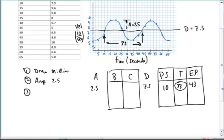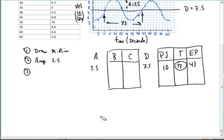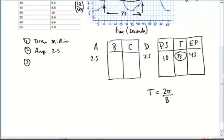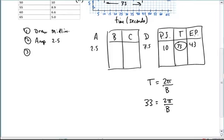Using that information, we use, we know that the period is equal to 2π over the frequency value. And we're going to just calculate, we're going to substitute in 33 for the period, put 2π over b, and when we cross multiply, b will equal 2π over 33 units.